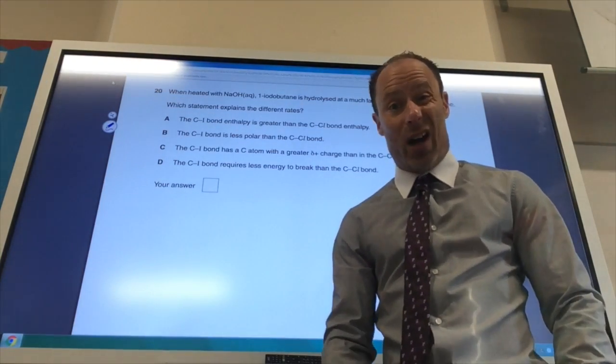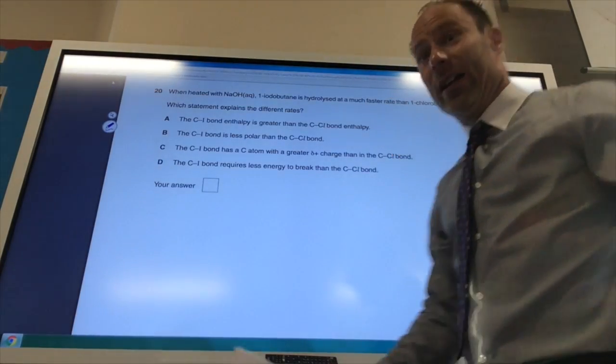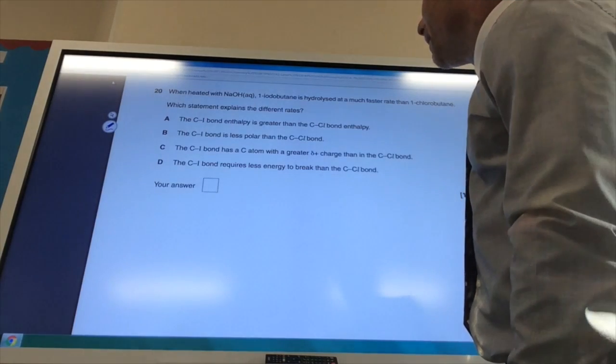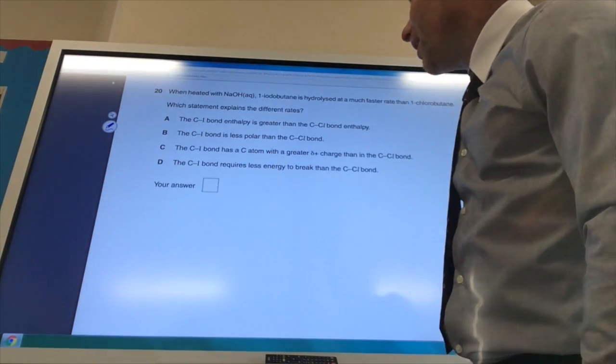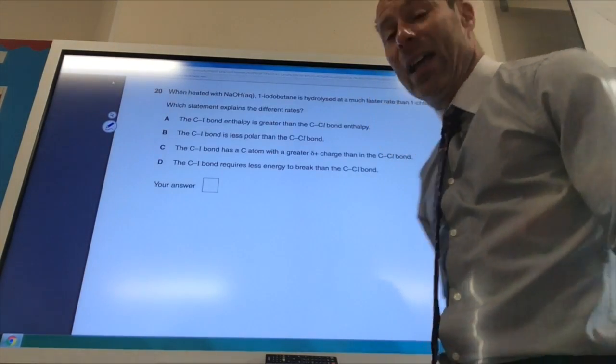It's because the carbon-iodine bond is much longer and much weaker because the iodine atom is much bigger. Therefore, the answer is D: the C-I bond requires much less energy to break than the C-Cl bond.